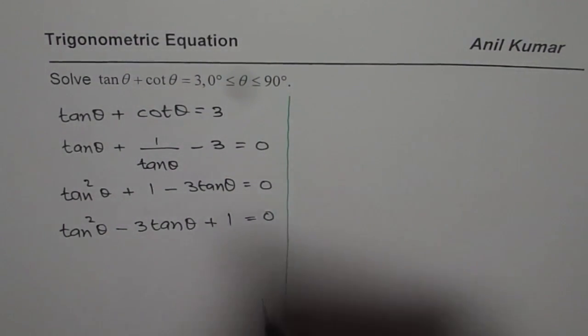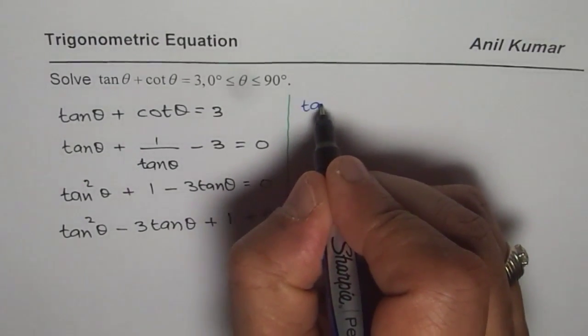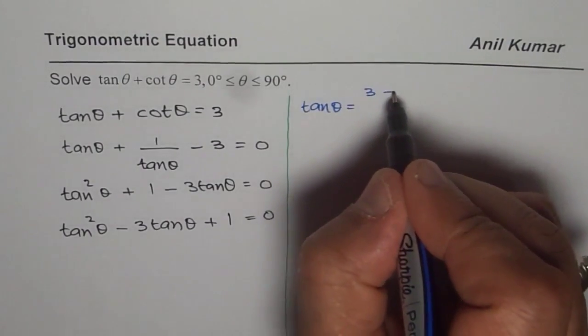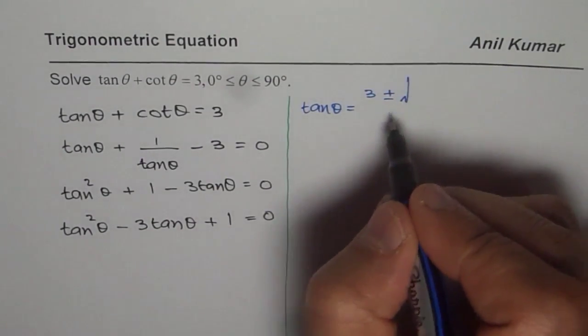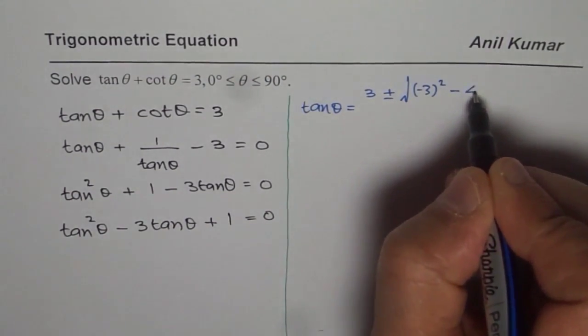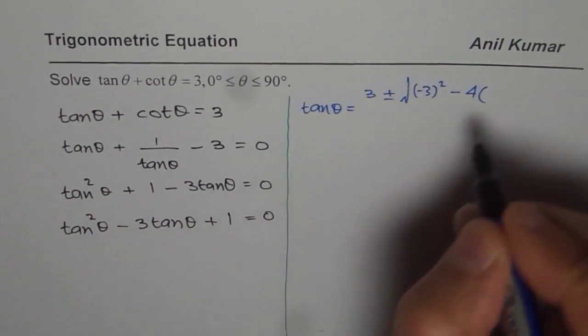We can say tan θ equals minus b which is 3 plus minus square root of b square. So minus 3 square, let me write minus 4 times a is 1, c is 1.